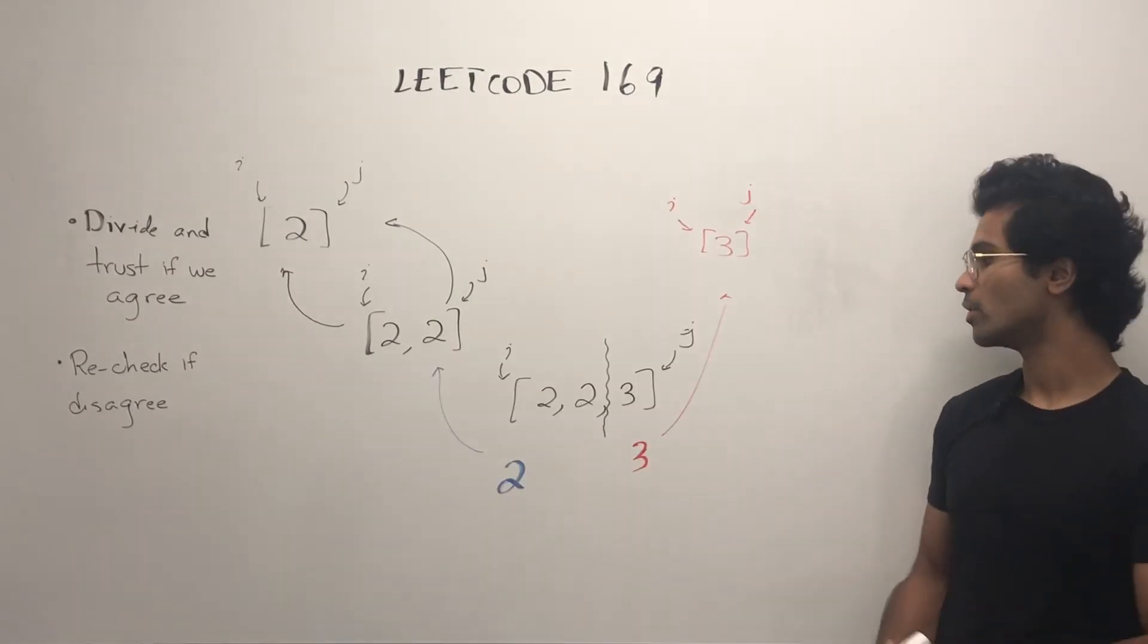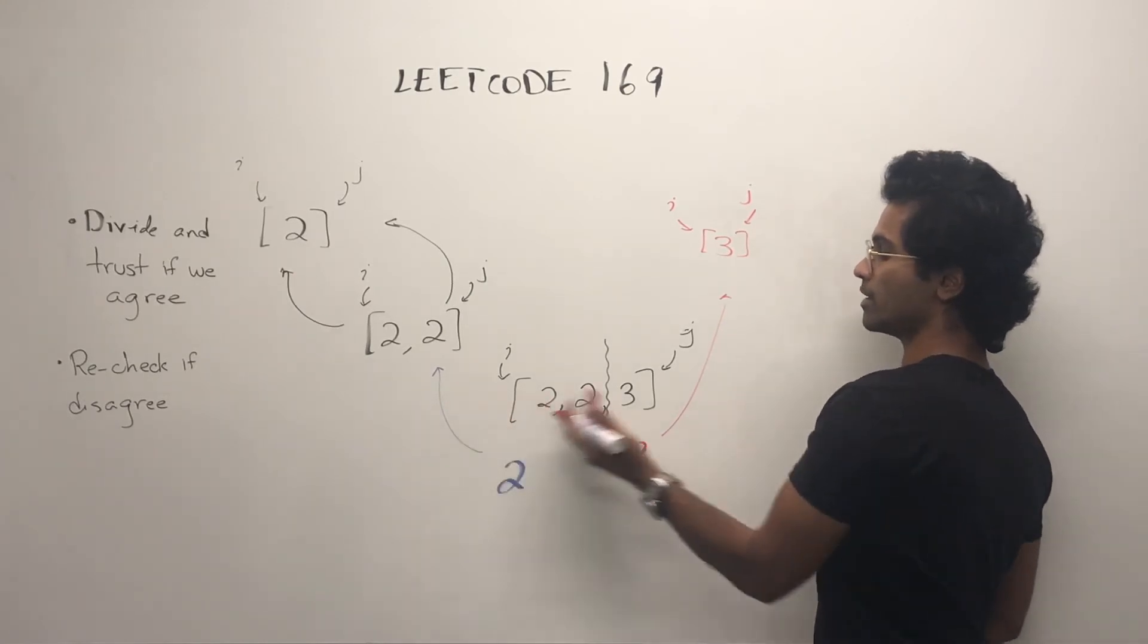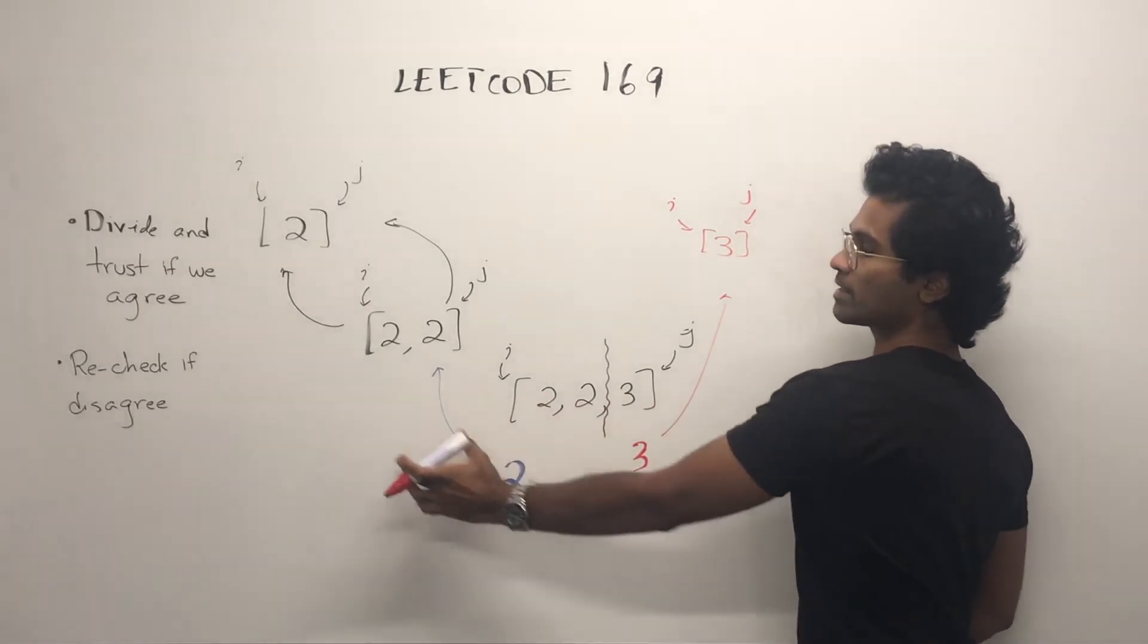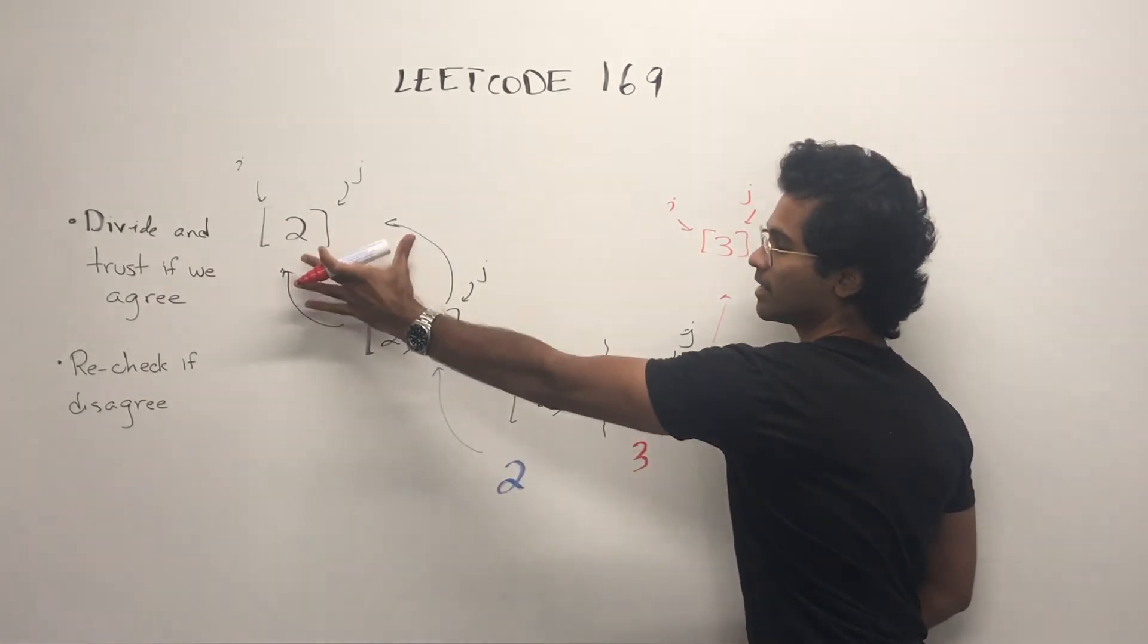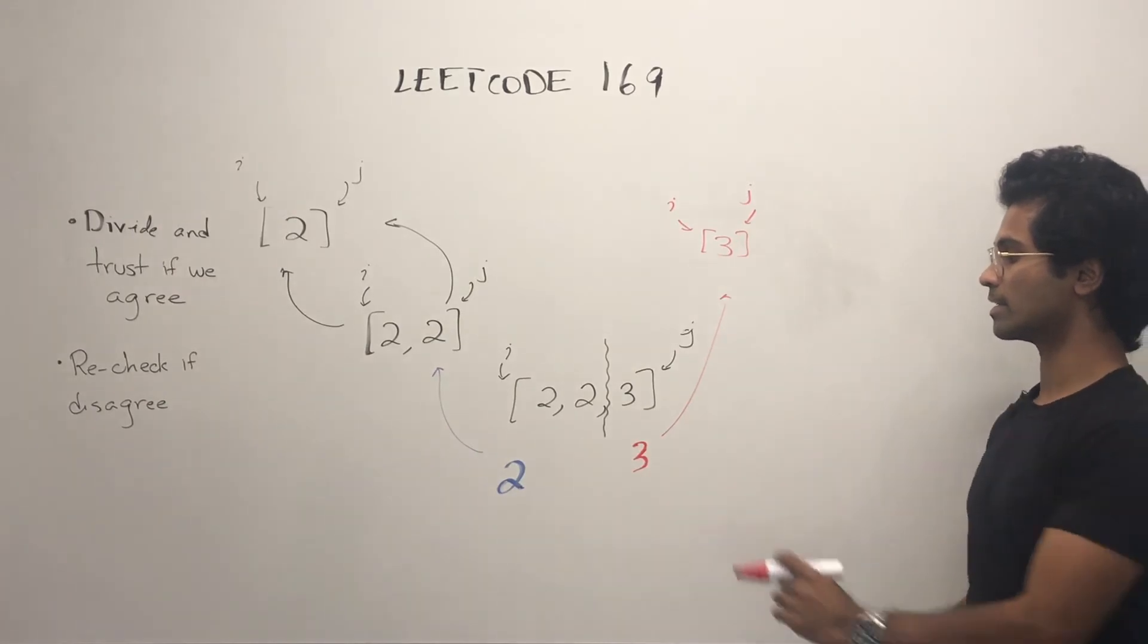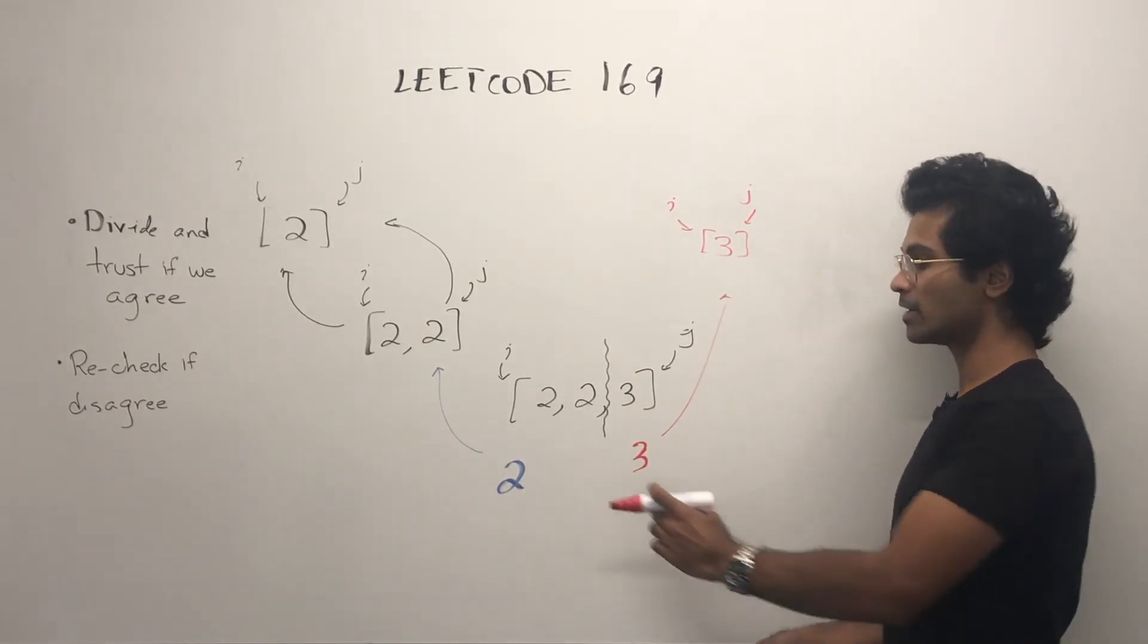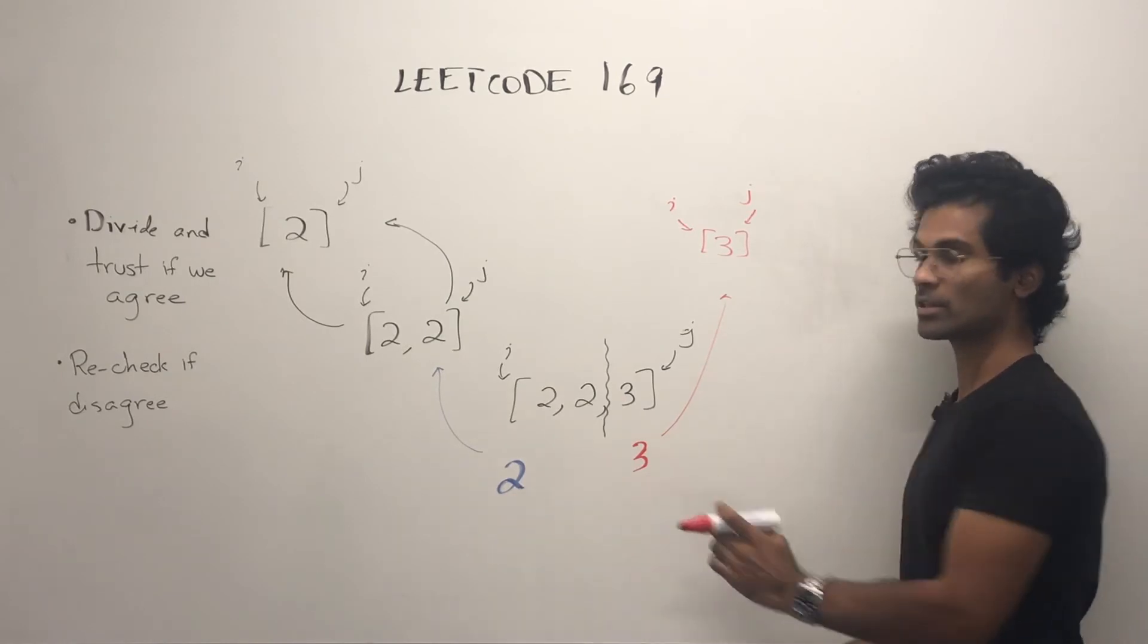What about this case? What if we introduce a new number? Now, when we split it in half, so with the i and j, this is going to boil down to this, and this is going to boil down to that. So these guys are going to return two. The three is going to say, wait a minute, three is my majority element, and because now this and this are different, the left and right subarrays disagree.